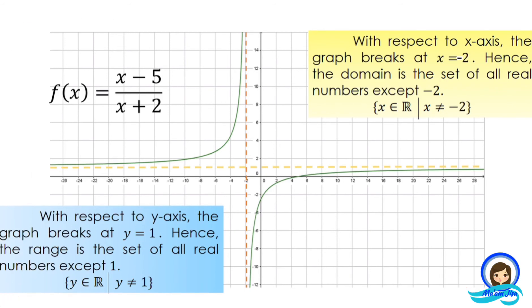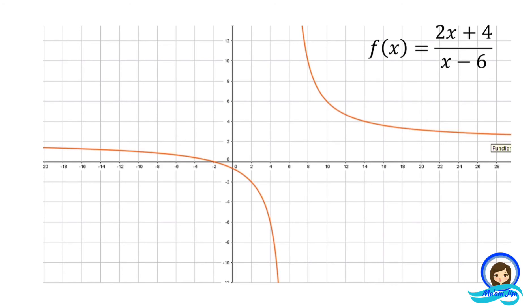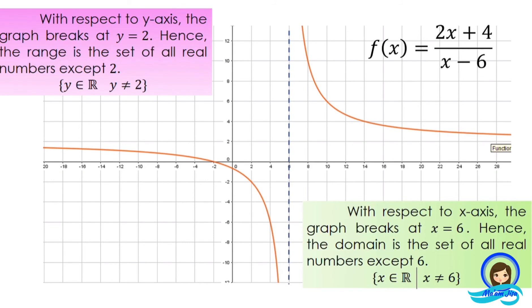Let us proceed to our second example. Our second rational function is quantity 2x plus 4 over quantity x minus 6. Again, using the graphing software GeoGebra, this is how the graph looks like. With respect to the x-axis, the graph breaks at x equals positive 6. Hence, the domain is the set of all real numbers except 6. With respect to the y-axis, the graph breaks at y equals positive 2. Hence, the range is the set of all real numbers except 2.